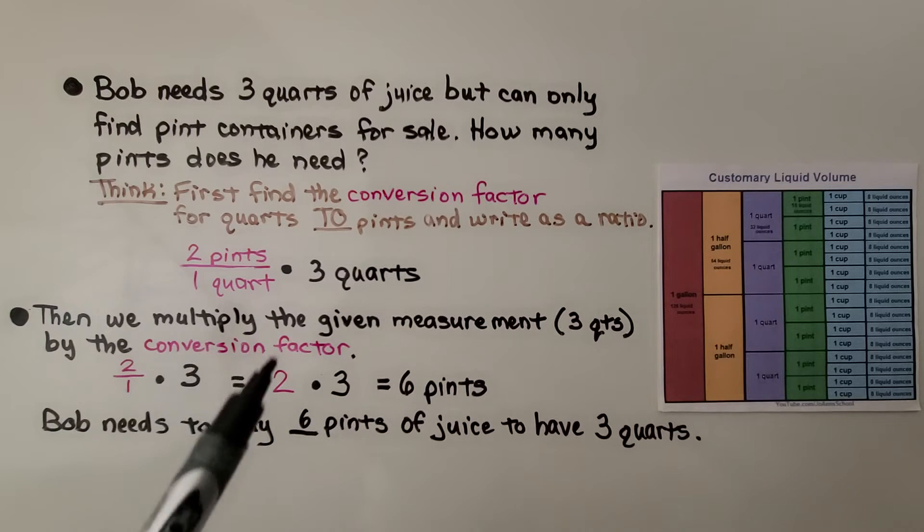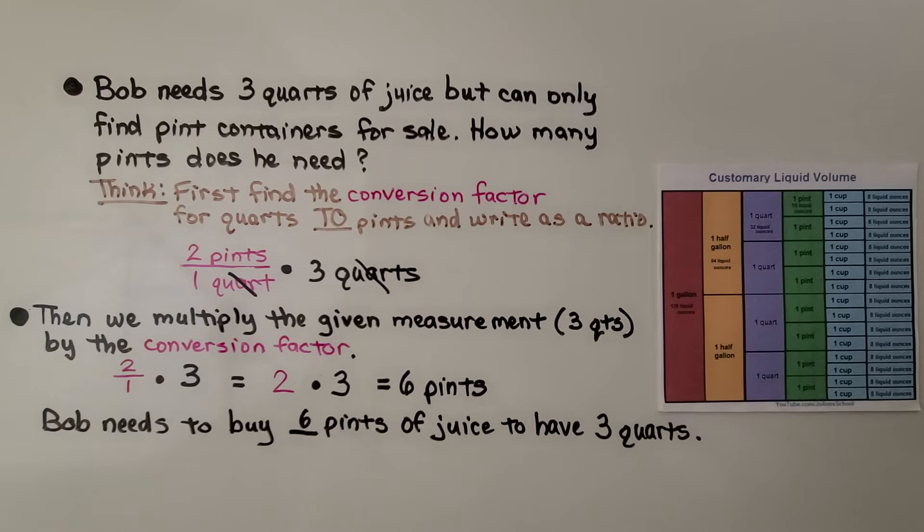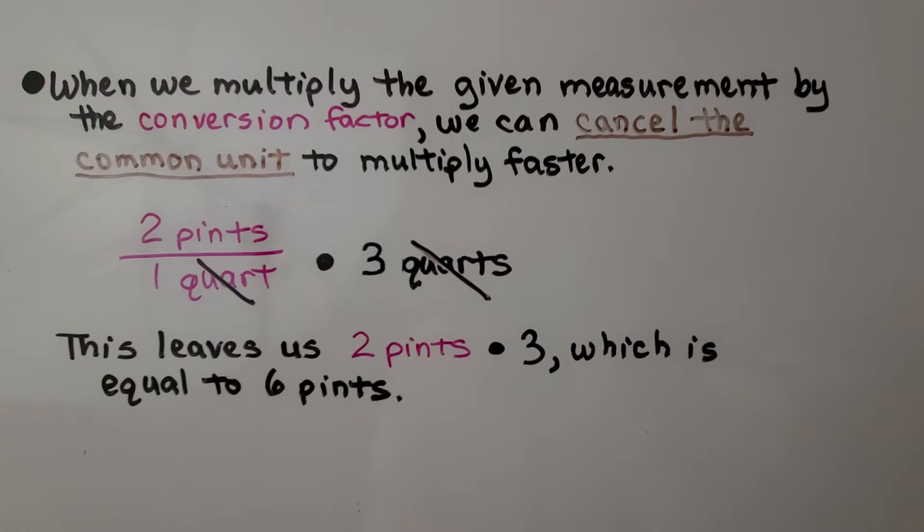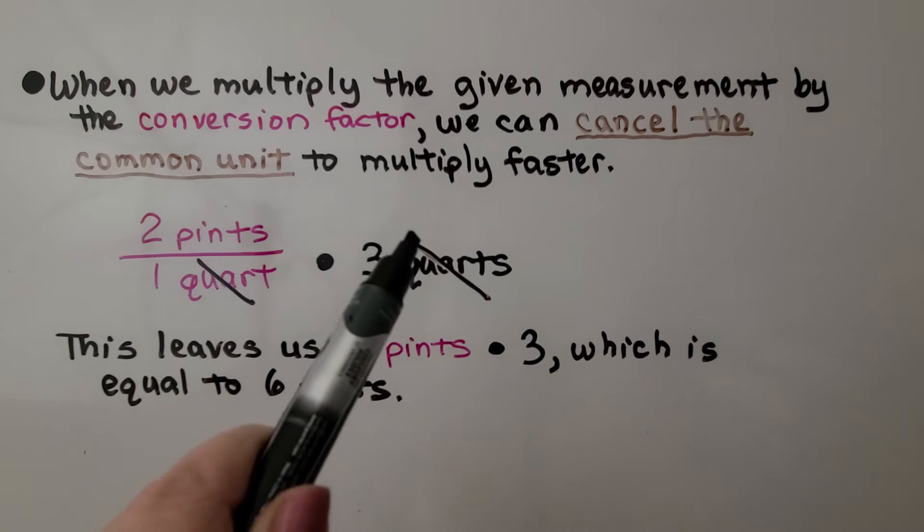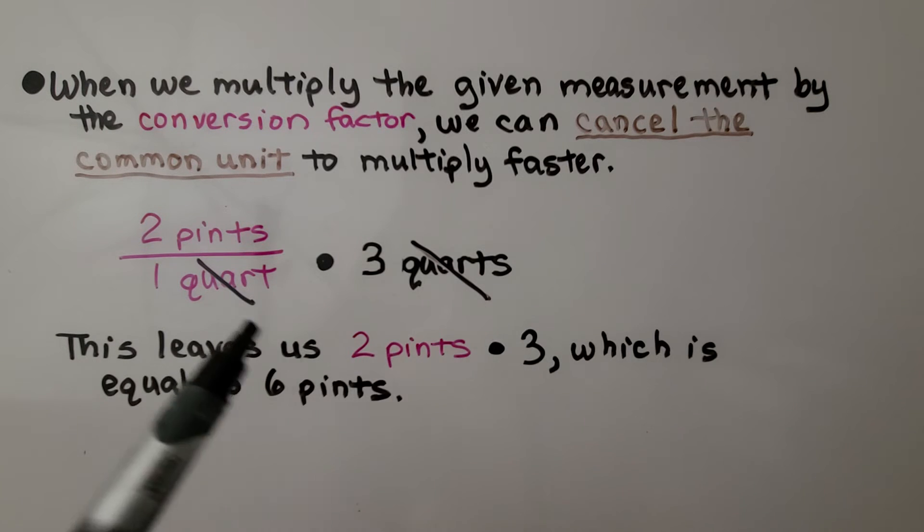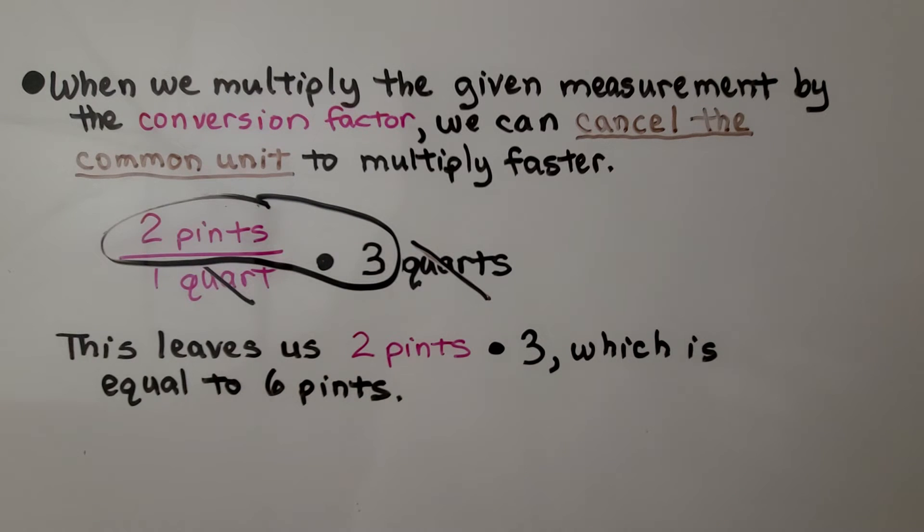And we can do this by canceling out the common unit. I'll show you how. When we multiply the given measurement by the conversion factor, we can cancel the common unit to multiply faster. We had 2 pints over 1 quart. We're multiplying it by 3 quarts. We cross out the quart here. We cross off the quart here. And we have 2 pints times 3, which is 6 pints.